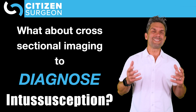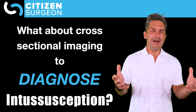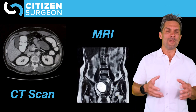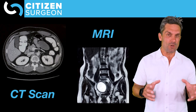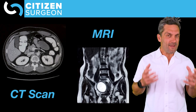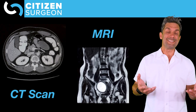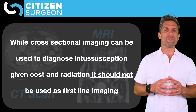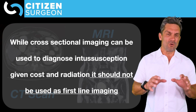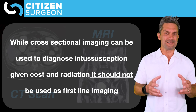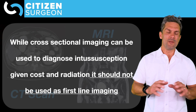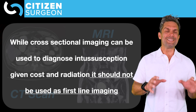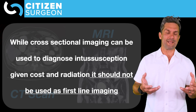How about cross-sectional imaging — CT scan or MRI? Yes, they can diagnose intussusception, but they come at significant cost and CT involves radiation exposure. The bottom line is cross-sectional imaging should not be used as first-line imaging for diagnosing intussusception. Ultrasound is so sensitive, without radiation, and low cost that we shouldn't be routinely CT scanning or MRI-ing children we're working up for this diagnosis.